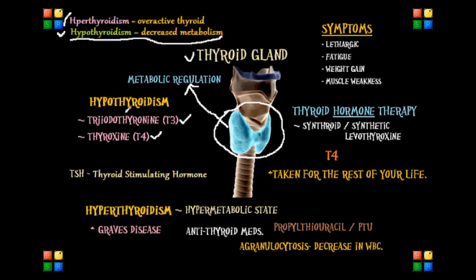Now let's look at these hormones in relation to hypothyroidism. Hypothyroidism is a condition in which there is an inadequate amount of circulating thyroid hormones, specifically triiodothyronine or T3 and thyroxine, which is T4. Both of these hormones cause a decrease in the body's metabolic rate.